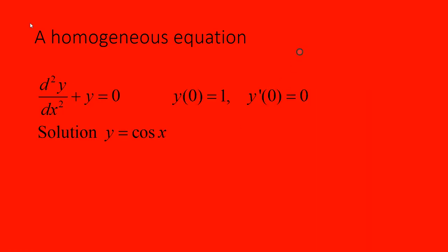Let's add in conditions at zero, a condition on the function, a condition on the derivative, and we get that the solution is now y equals cos x.